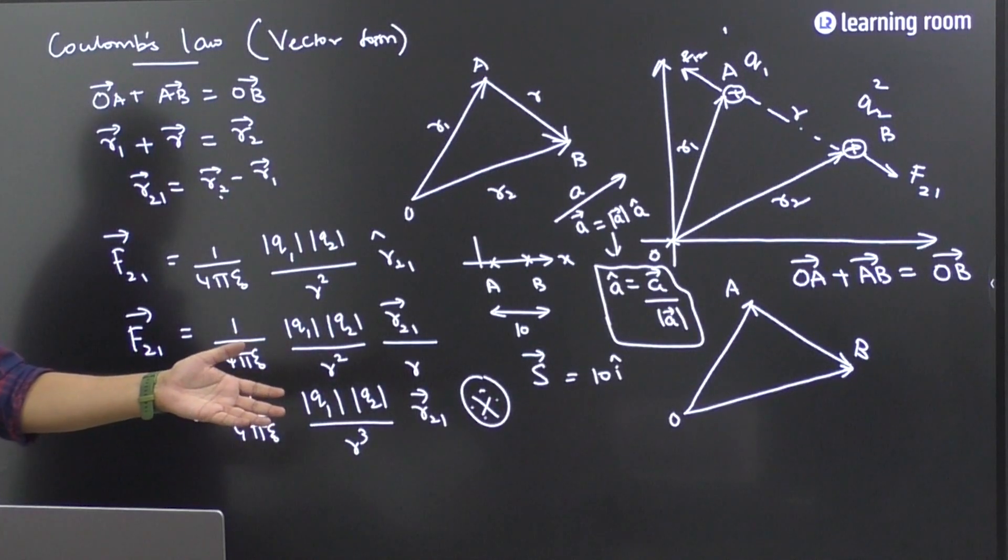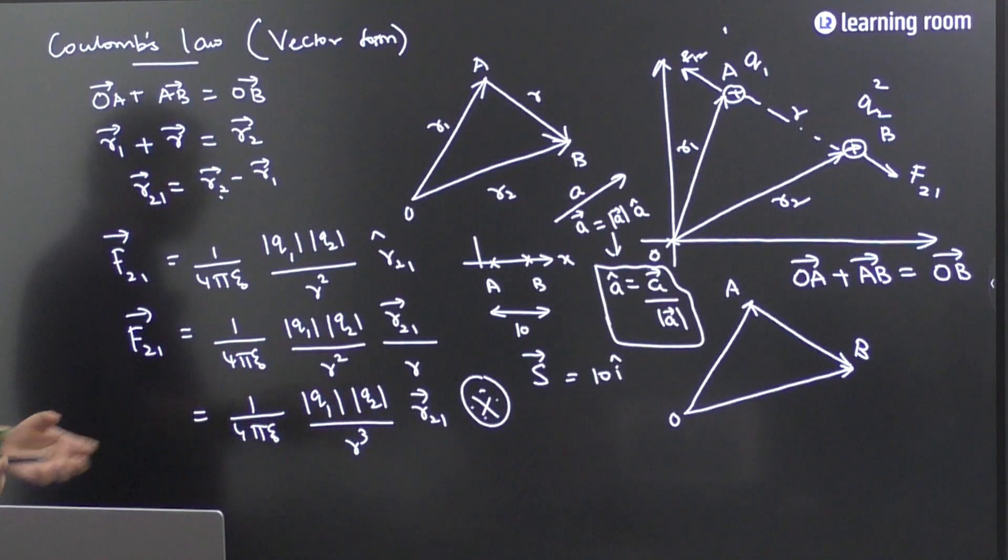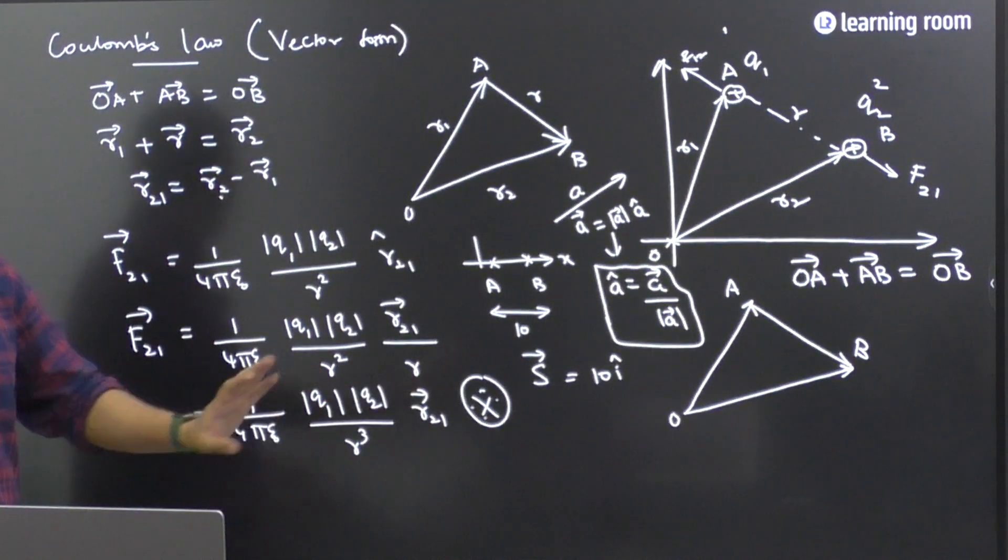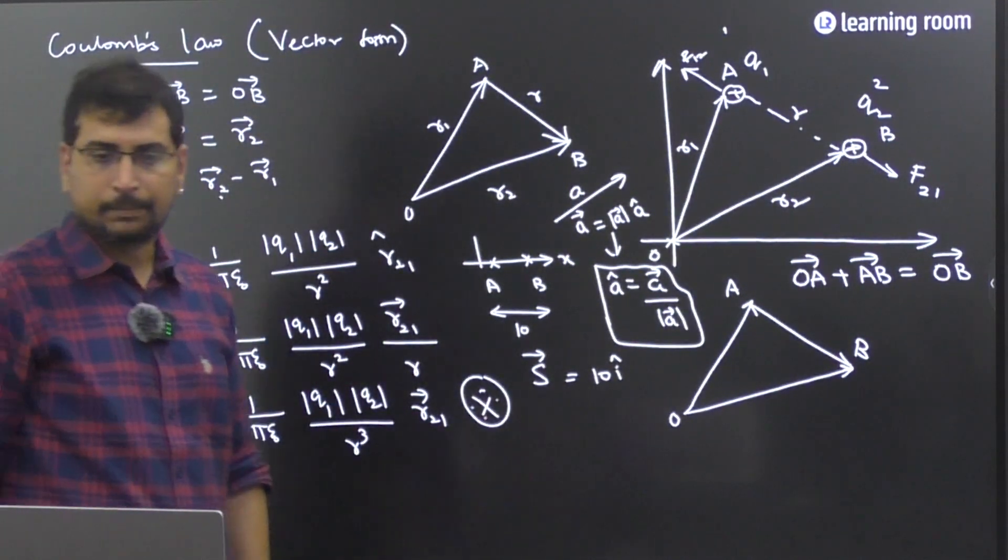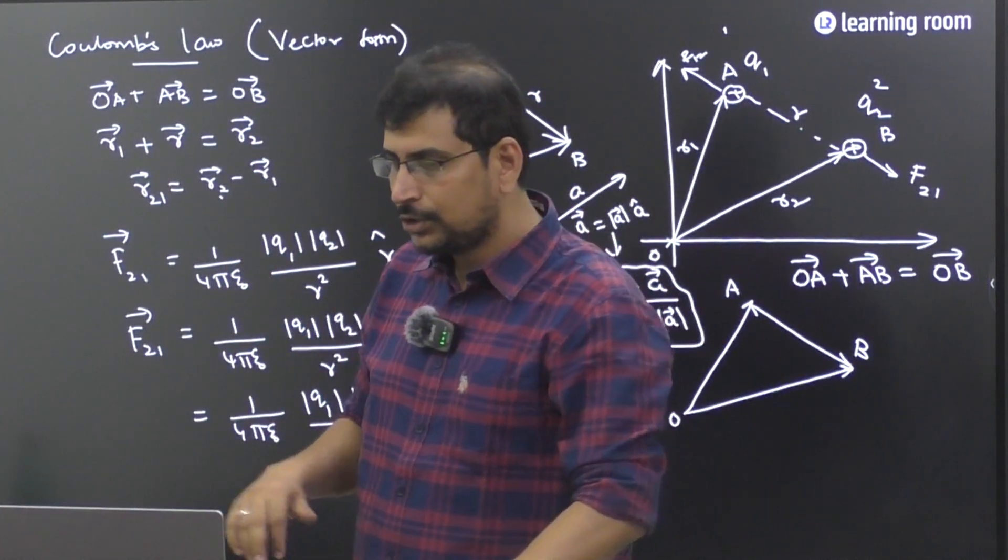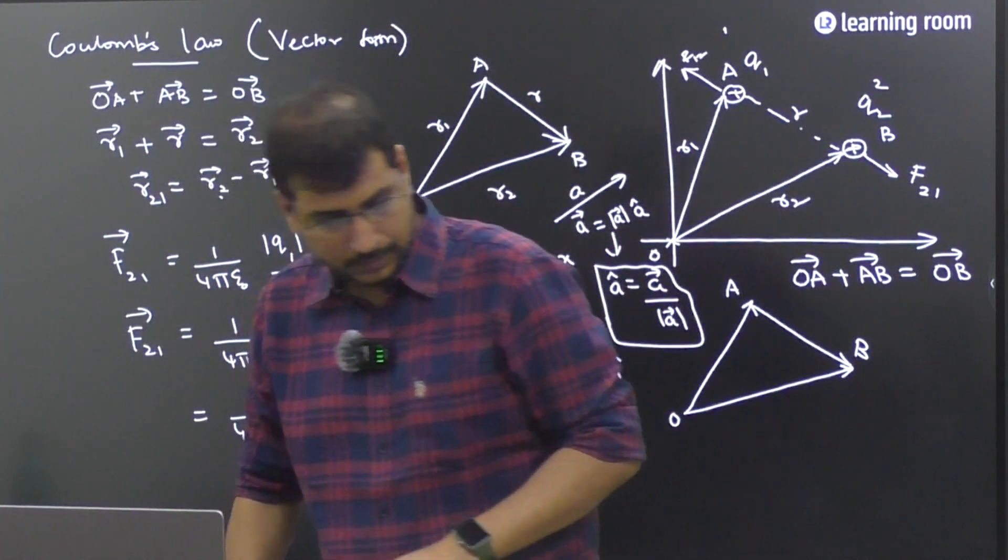So that part you can write it as, similarly, f1, 2 vector will be equal to, change as r1 to here, r1 to here, you are done. So that part I am leaving it to you. Shall I proceed to the next part? Yes, sir.